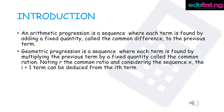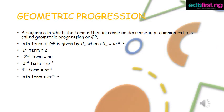Considering the sequence, the (i+1)th term can be deduced from the ith term. A geometric progression is a sequence in which the terms either increase or decrease by a common ratio, and is called a geometric progression or GP.